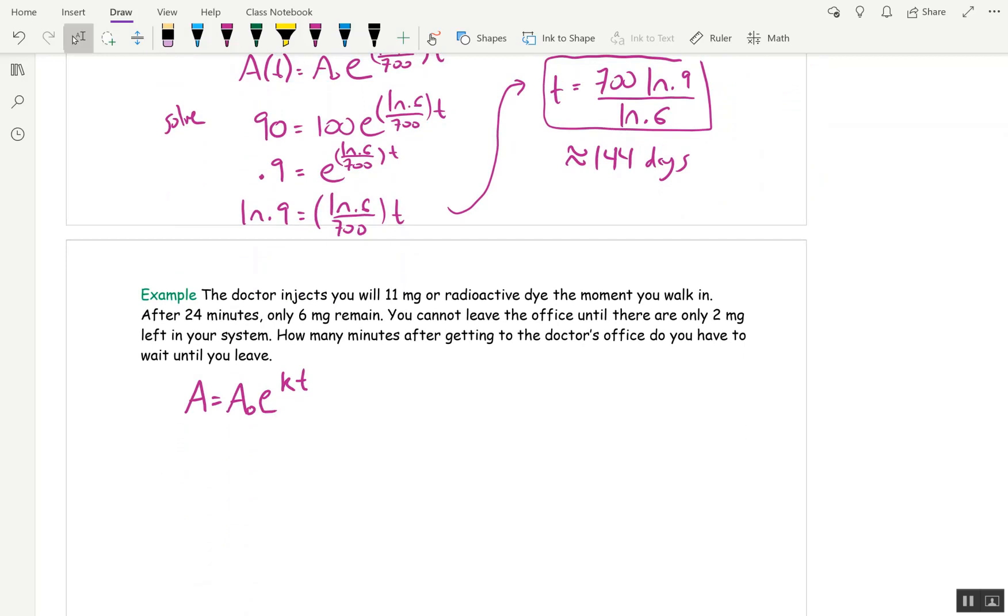Another example. Doctor injects you with 11 milligrams of radioactive dye the moment you walk into the office. Not a very nice doctor. After 24 minutes, only 6 grams remain. You can't leave the office until there are only 2 grams left in your system. How long do you have to wait to leave? All right. So here's our guiding equation.